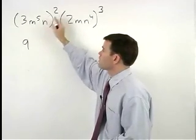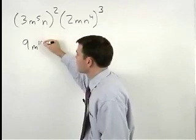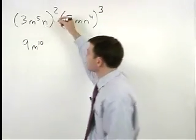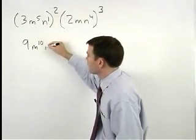So we have 5 times 2 which gives us m to the tenth and think of n as n to the first. So 1 times 2 is 2 and we have n squared.